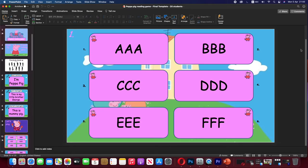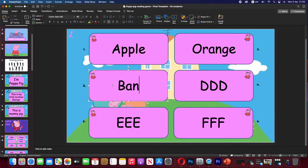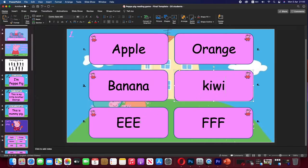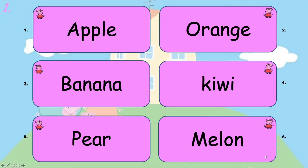Of course, this is a template, so you can put whatever you want in here. For example, I can put apple, orange, banana, kiwi, pear, strawberry, melon — all easy to add. You can build this game with single words, full sentences, whatever level you want.